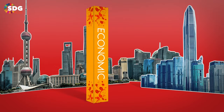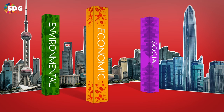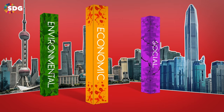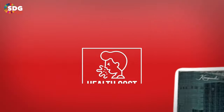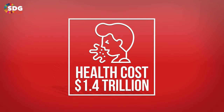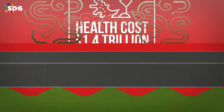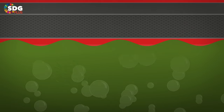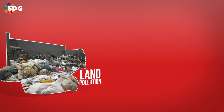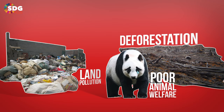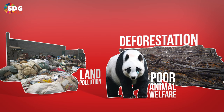During this period of economic prosperity, China's environmental and social pillars took a hit. A 2017 report estimated that China will suffer a health cost of $1.4 trillion because of its air pollution. On top of this, China's geological survey reported that nearly 90% of Chinese cities had polluted groundwater. Simultaneously, China is also dealing with land pollution, deforestation and poor animal welfare.